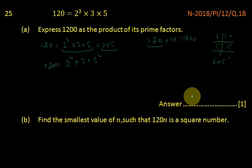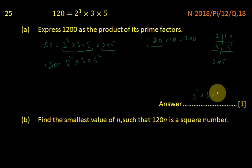So the prime factorization of 1200 is 2 to the power 4 multiplied by 3 multiplied by 5 squared.